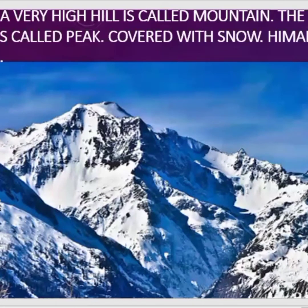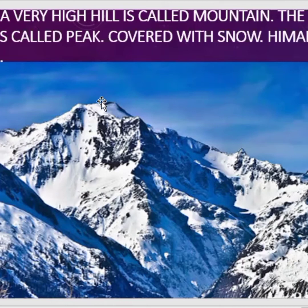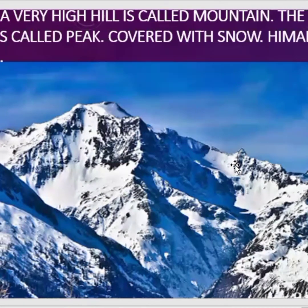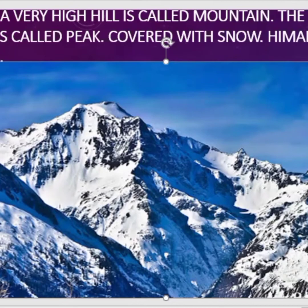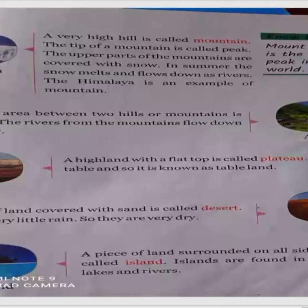The mountain is a very high hill. The tip of the mountain is called peak. The upper part of the mountains has snow. The tip of the mountain is called peak. Mountain example is Himalaya — the great Himalayan mountains are an example of mountain.